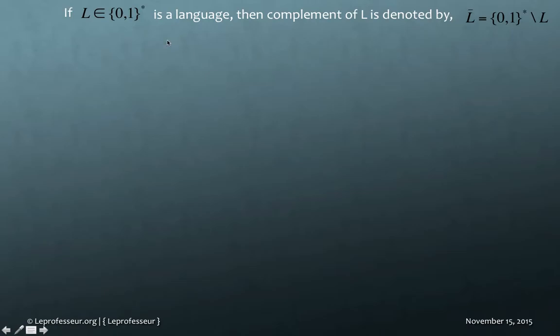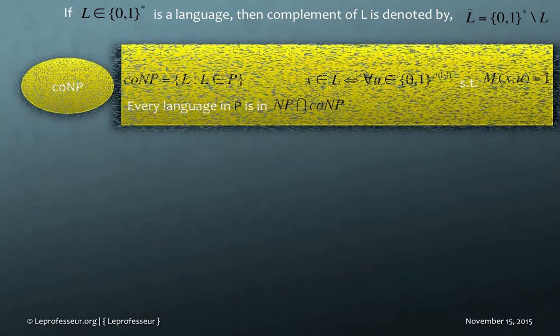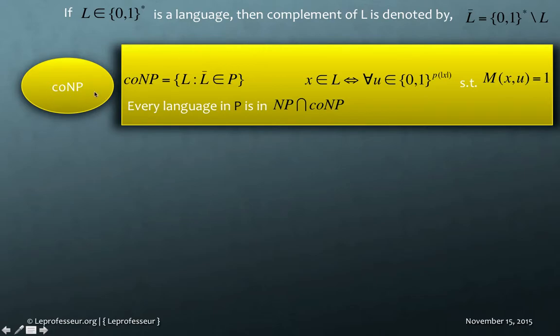Now let's look at another thing. For example, if we have a language L, then the complement of this language we can denote it by this form. So why are we discussing about the complement of the language L? Simply because we want to discuss a complexity class called CONP, complement NP. However, don't think that this is the complement of NP. No, it is simply a class for which the complement of your language L belongs to P, or the problems which can be solved in polynomial time, or in other words you can denote it in this form.